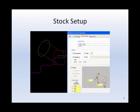Expand Properties in the Operations Manager and select Stock Setup. Select Cylindrical about the X-Axis. Set the stock diameter to 2 inches, the stock length to 3 inches. And then under the Stock Origin tab, set the origin position to X-3 inches.